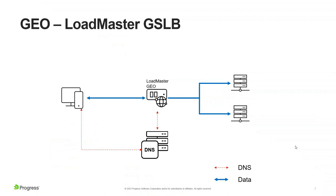The data path is created from the client through the load master virtual service, which then connects to the servers on the backend where load balancing happens. So you've got two types of load balancing: DNS load balancing, which happens before the client makes a data request, and actual data load balancing when the client makes a request to the virtual servers. Load Master GEO is doing two functions — it's doing the GSLB part providing the DNS, but it's also acting as a normal load balancer, so you don't need a dedicated appliance for each one.